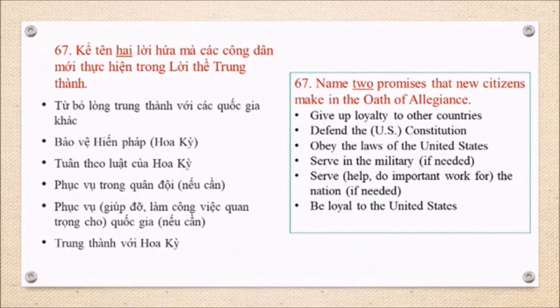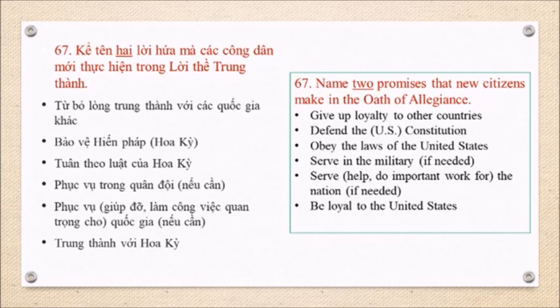Question 67: Name two promises that new citizens make in the Oath of Allegiance. Give up loyalty to other countries. Defend the U.S. Constitution. Obey the laws of the United States. Serve in the military if needed. Do important work for the nation if needed. Be loyal to the United States.